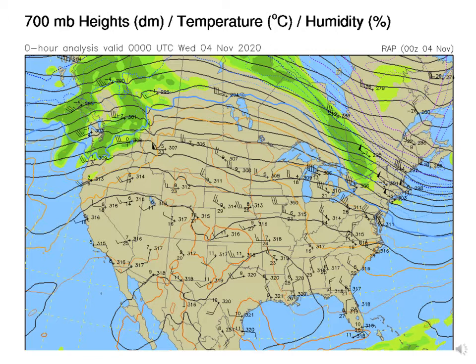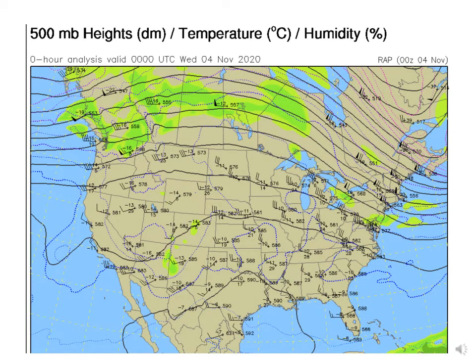Now we're looking at the 50 kPa map, which looks very similar to the 70 kPa but at a higher altitude. For Salt Lake City, the geopotential height of this pressure surface is 580 decameters, or 5,800 meters. The temperature is minus 14°C, the dew point depression is 15, so the actual dew point is minus 29°C, and the winds are from the west at 20 knots. Superimposed are temperature contours in dashed blue, geopotential height contours in solid black, and humidity in green.